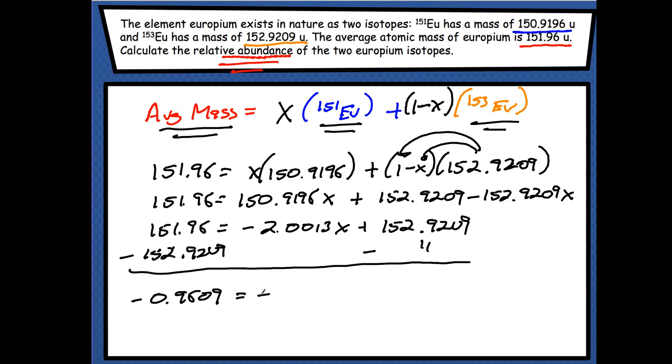I'm going to carry everything over, minus 2.0013x. So, I've combined like terms. And now I've got to solve for my x. And the way I solve for my x is I divide both sides by negative 2.0013 to both sides.